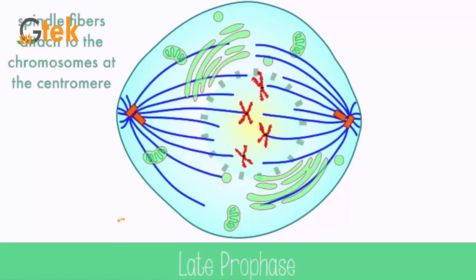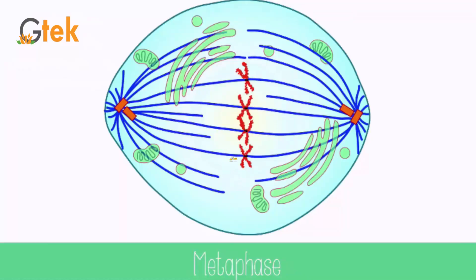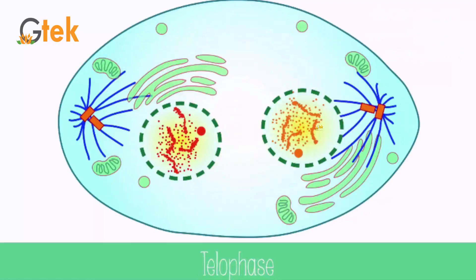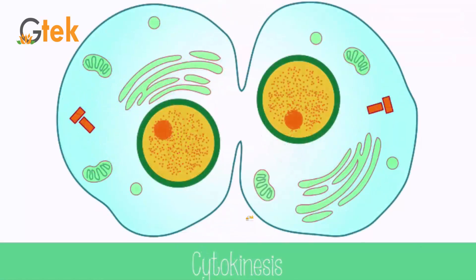This phase is called late prophase. Here the chromosome is attached to the fibers. This is called metaphase. This phase is called anaphase — here the chromosome separates at the centromere. You can see how the chromosome is separated from the centromere. And finally the cell is divided into two, so it contains two nuclei. You can see over here it contains two nuclei.